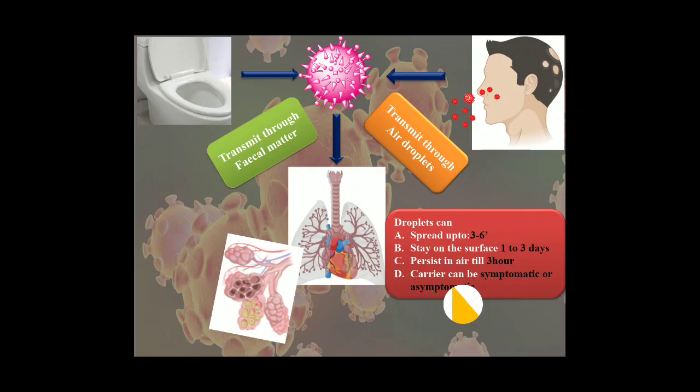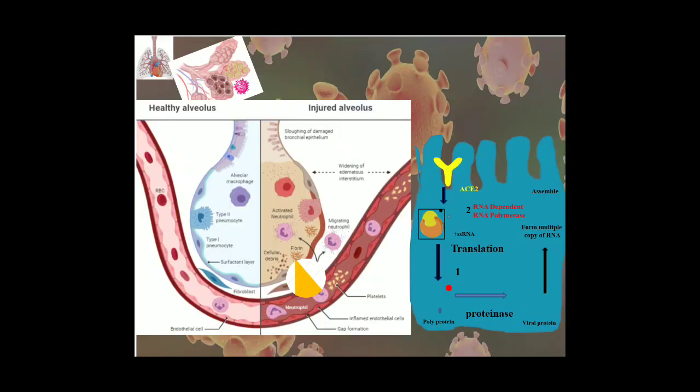Generally, this coronavirus loves to attack the lungs, especially the alveoli. So here is the enlarged view of the alveoli. Here is the healthy alveoli and this side is the injured one. Our alveoli are generally made up of two types of pneumocyte, type 1 and type 2.